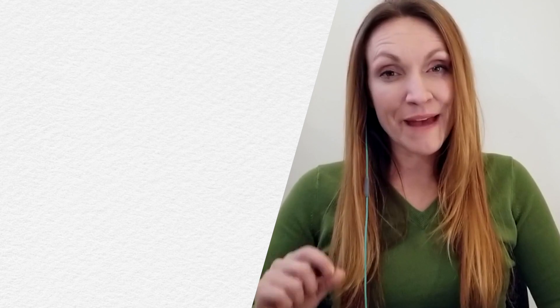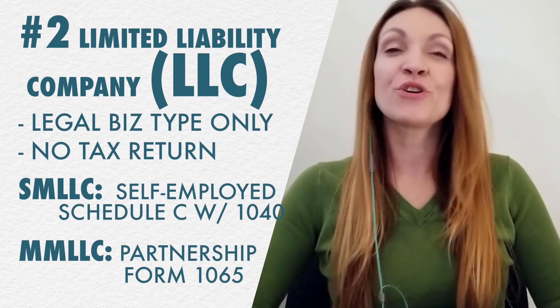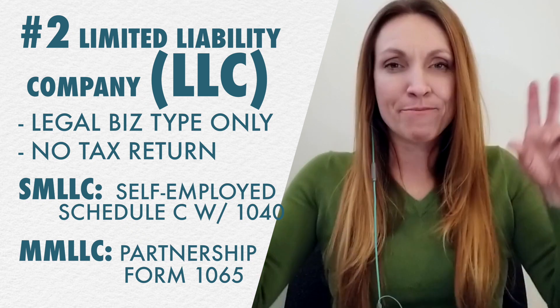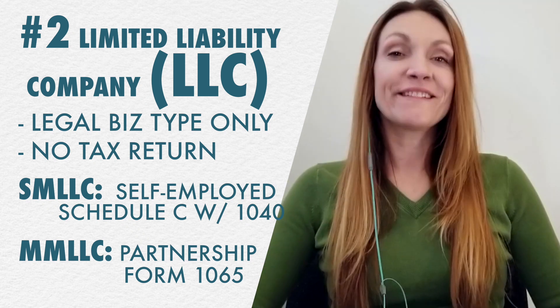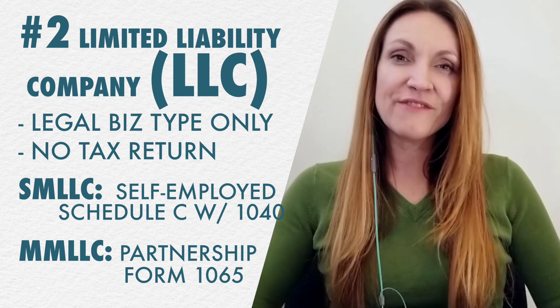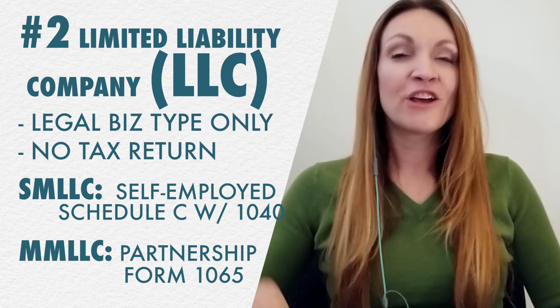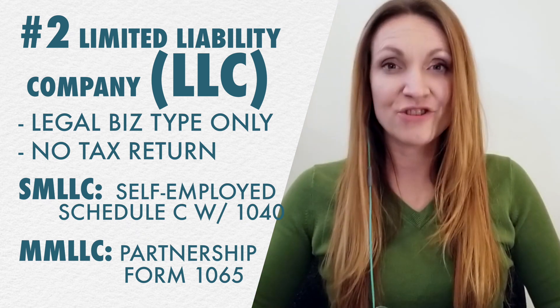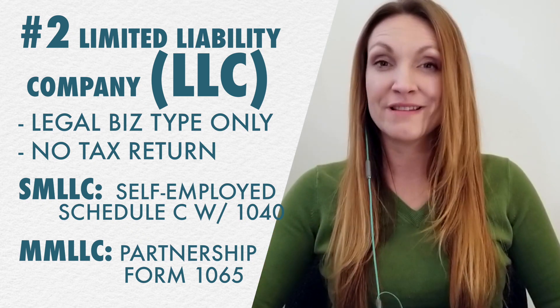The second type of business is an LLC. The tax form you complete as an LLC depends on how many owners you have. If you have only one owner, you're a single-member LLC. Because the IRS never created a tax form for the LLC, you default to being self-employed — so you have the best of both worlds. You get to file your taxes just like a sole proprietor, with your personal return on a Schedule C.